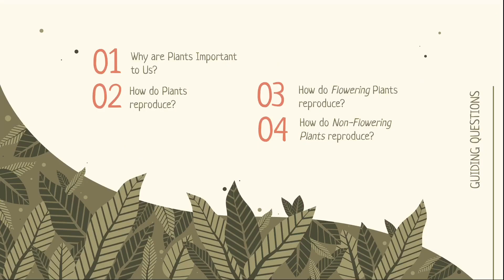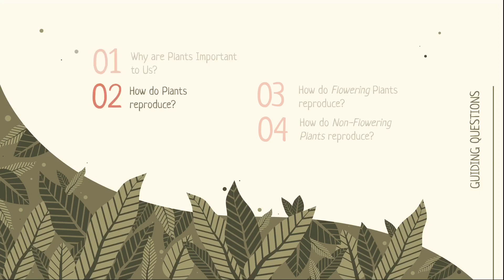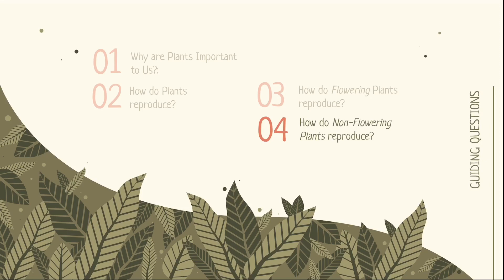Let's recap the four guiding questions. Plants are important and have to reproduce because many living things depend on them for survival. Plants reproduce through seeds or spores. Flowering plants reproduce through the dispersal of seeds found in fruits — these seeds can be dispersed by wind, water, animals, and explosive action. Non-flowering plants reproduce by spores, not seeds.